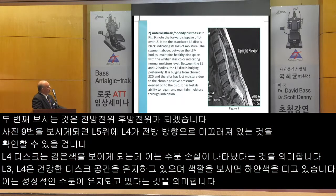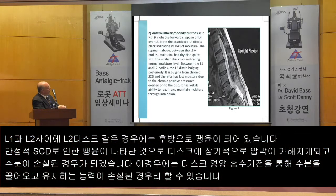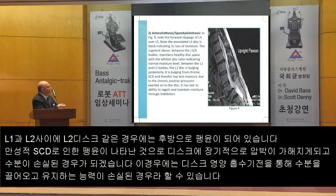Anterolisthesis and spondylolisthesis. In Figure 9, note the forward slippage of L4 over L5. Note the associated L4 disc is black, indicating loss of moisture. The segment above — L3-L4 bodies — maintain healthy disc space with a whitish disc color indicating normal moisture level. Between L1 and L2, the disc is bulging posteriorly from chronic spinal compression and has lost moisture due to chronic positive pressures exerted on the disc. It has lost its ability to regain and maintain moisture through imbibition.